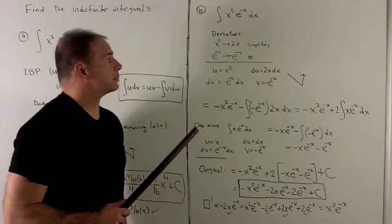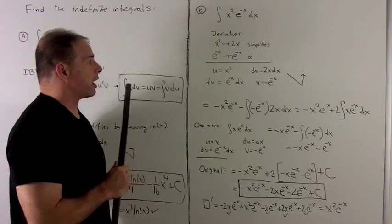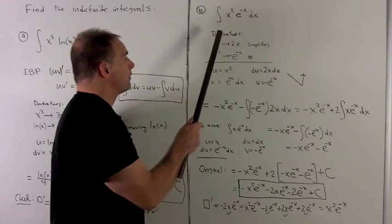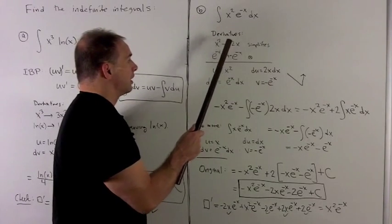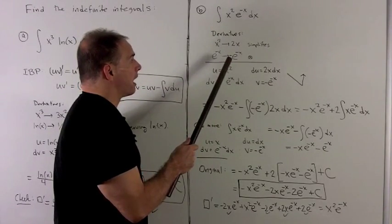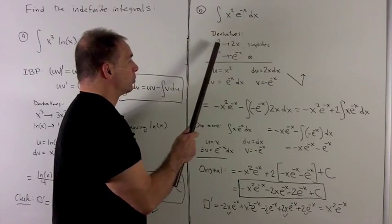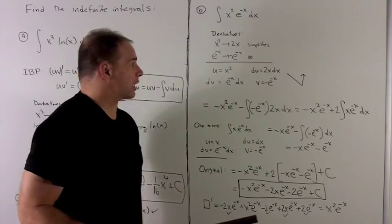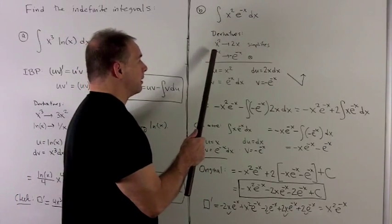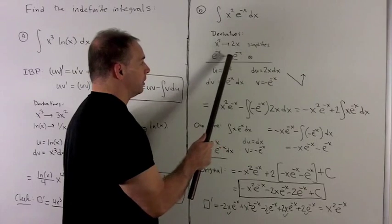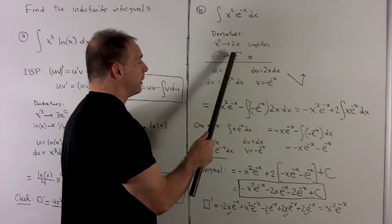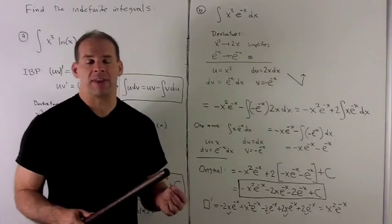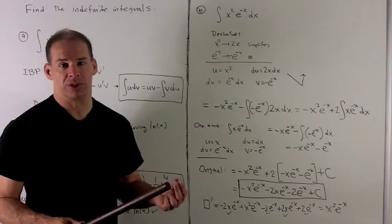Let's take a look at another example — the integral of x squared times e to the minus x. Taking the derivative of each piece: derivative of x squared gives 2x, which lowers the exponent. Derivative of e to the minus x just gives back e to the minus x with a minus sign — that won't simplify, it brings us back to where we started.